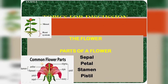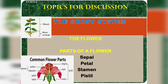Today we will talk about the shoot system. There is another topic: the flower — parts of flower and what are the parts of a flower. You may have seen many plants with flowers; some plants are identified by their flowers. Different flowers have different colors and smell, however some flowers do not have any smell. Flowers are of many shapes, sizes and colors.